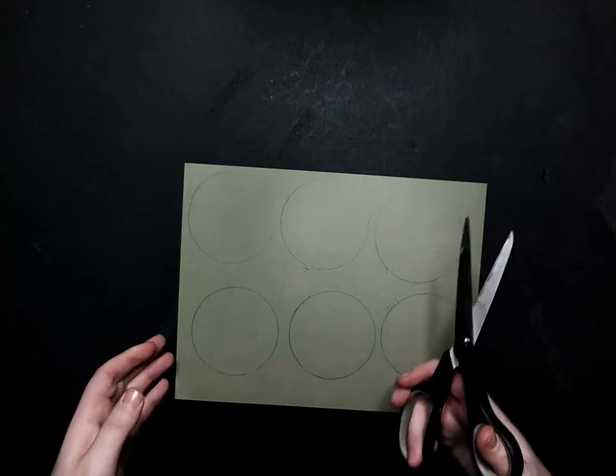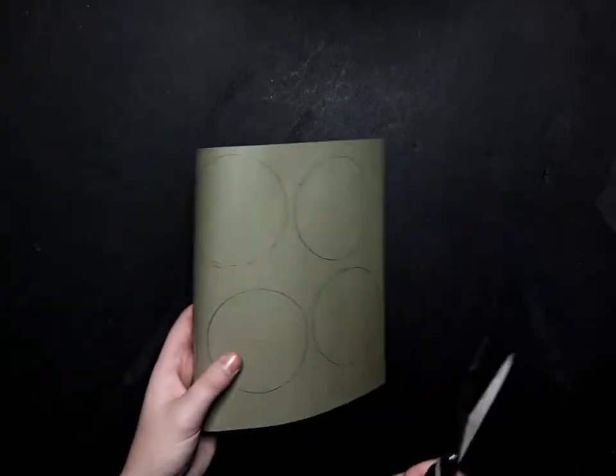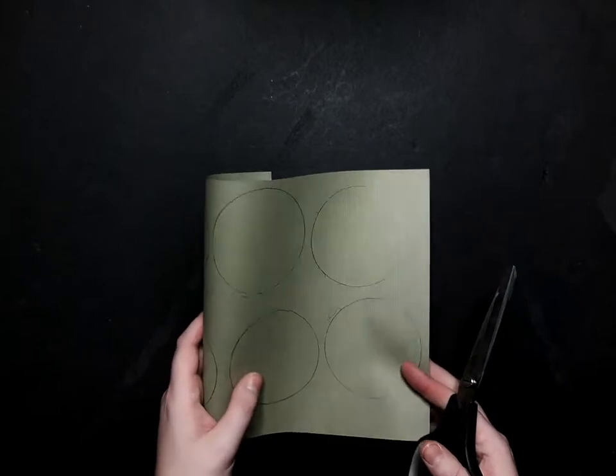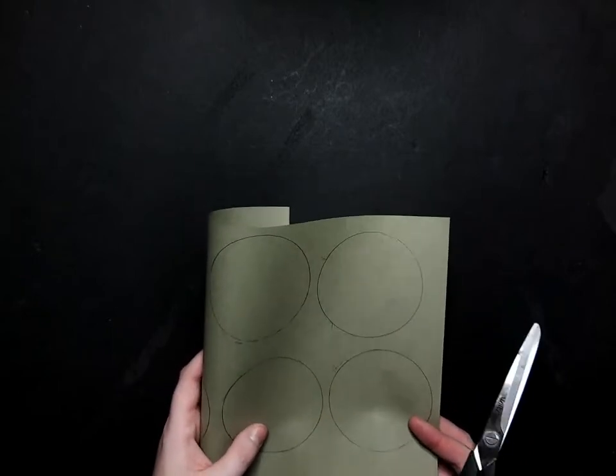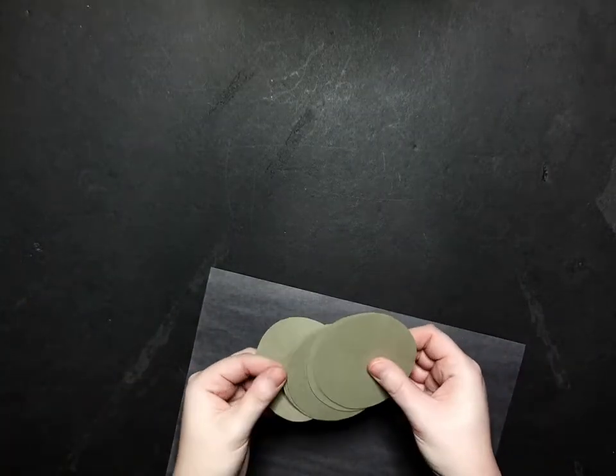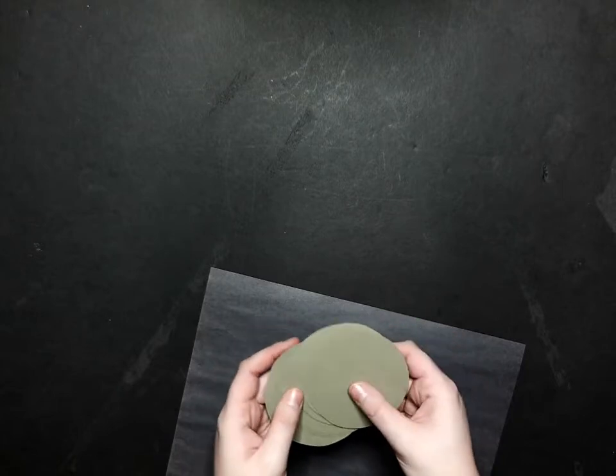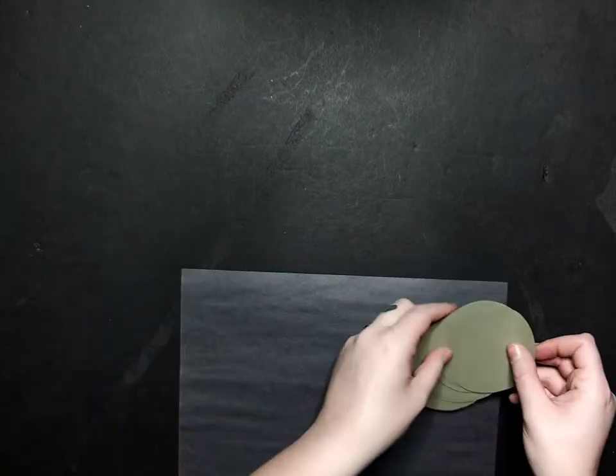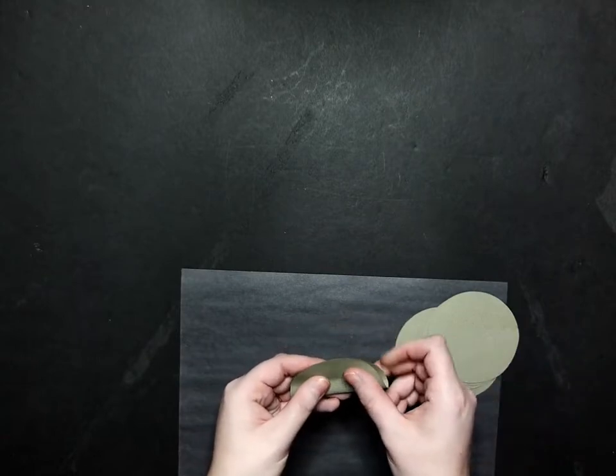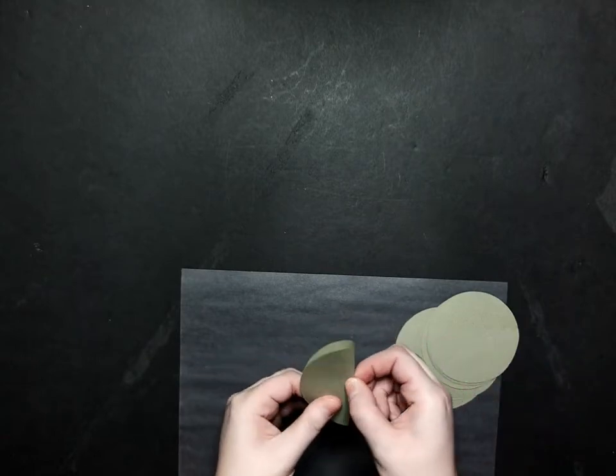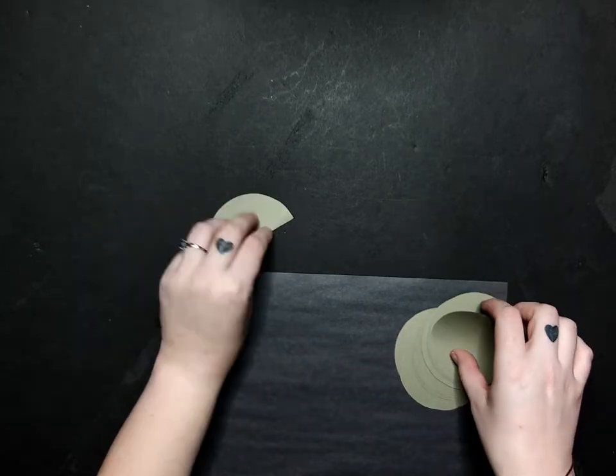Once you have all of those traced out we're going to grab our scissors and cut them out. Again, about 15 to 20 seem to be the perfect amount. Now I've gone ahead and pre-cut my circles. So I have 20 of my circles cut out. The next thing we're going to do is fold them in half just like that. They don't have to be exactly perfect but as close as you can get. And we'll just set those aside.